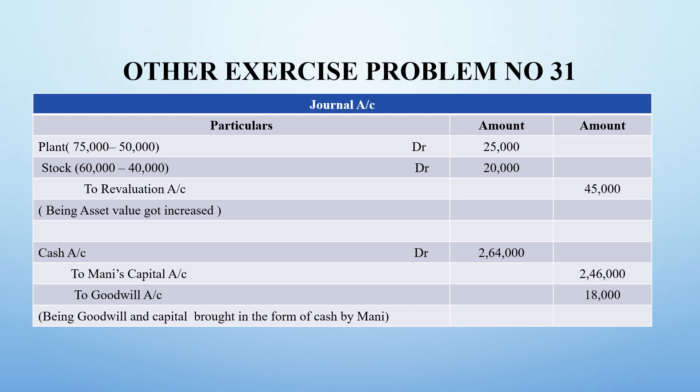Next, bank account is debited for 2,64,000 and capital account is credited. Mani has brought in capital of 2,46,000 and goodwill of 18,000. So being goodwill and capital brought in by Mani. The total cash brought in is credited to the respective accounts.